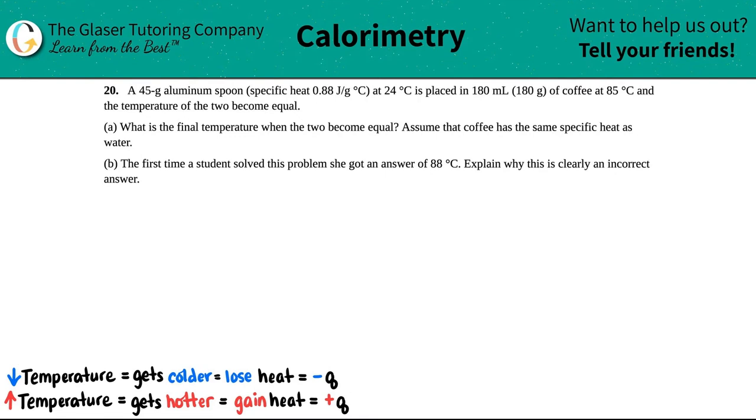Number 20: A 45 gram aluminum spoon with a specific heat of 0.88 joules per gram degree Celsius at 24 degrees Celsius is placed in 180 mL, which is 180 grams, of coffee at 85 degrees Celsius, and the temperature of the two become equal. Part A: What is the final temperature when the two become equal?